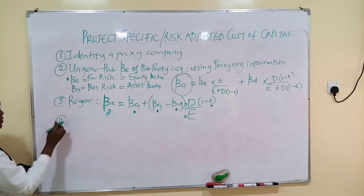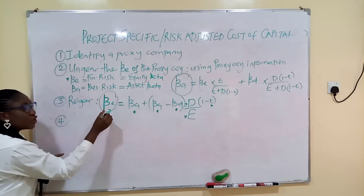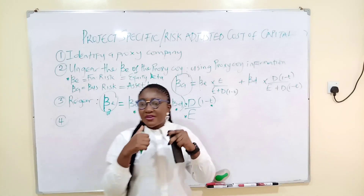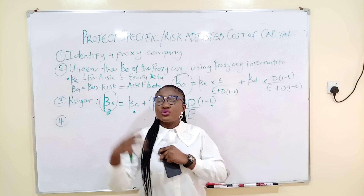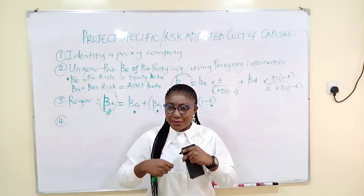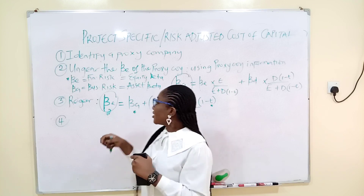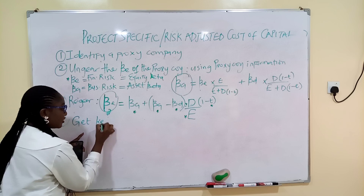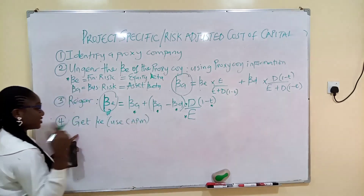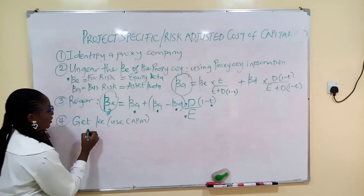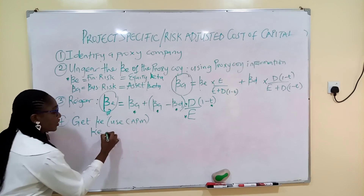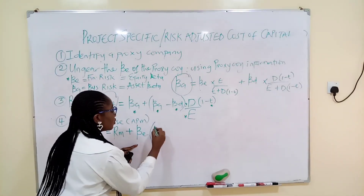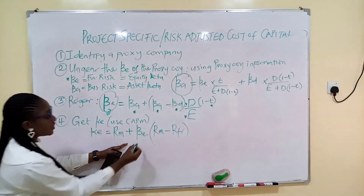Step four: take the regeared beta you've gotten and use it to determine the cost of equity. When investing in a new business — say, manufacturing bread before and now bringing in sandals — the cost of equity will change because a new business risk has been introduced. You use the CAPM formula: Ke = risk-free rate + βe × (market rate − risk-free rate). The βe you use here is the one obtained from regearing.